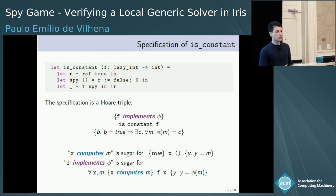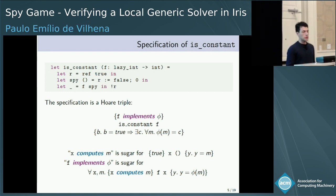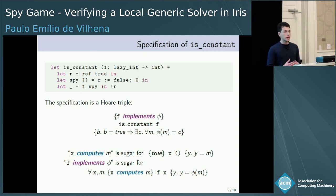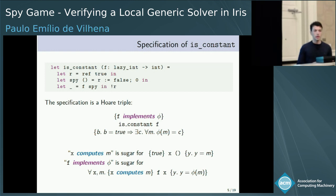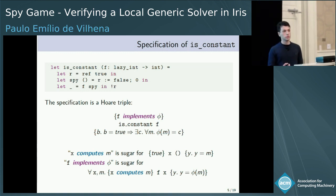There are two remarks before we continue. First, all of these Hoare triples do not mention resources or effects — it does not mean this code is pure; it can use impure features, but they must be hidden. Second, in the postcondition of is_constant, we do not mention the case where b is false — that is why this is an approximate solution.